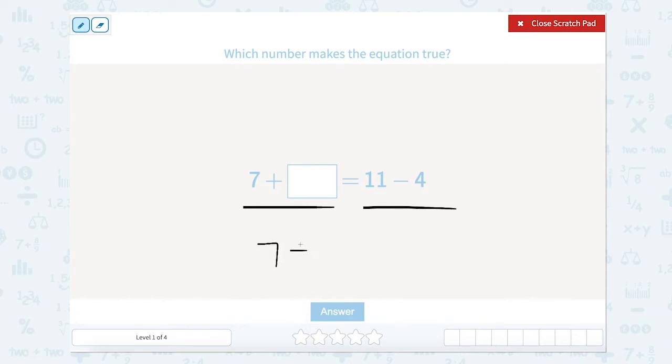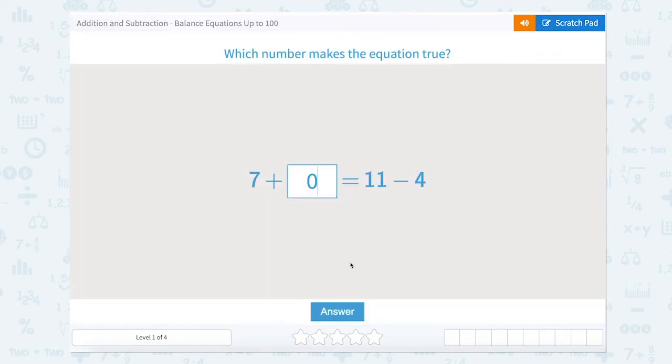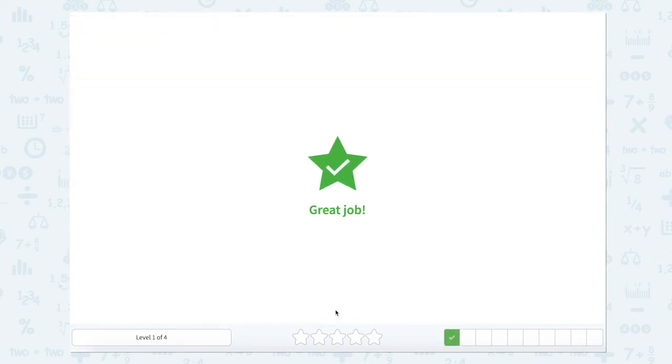So we have 7 plus blank equals 7. What number must be placed here to make this true, to make it equal to 7? Well, 7 plus 0 equals 7. So let's place that in there and answer our problem.